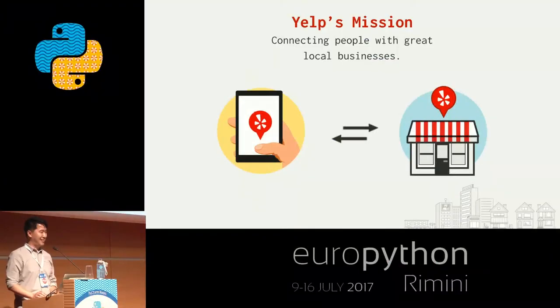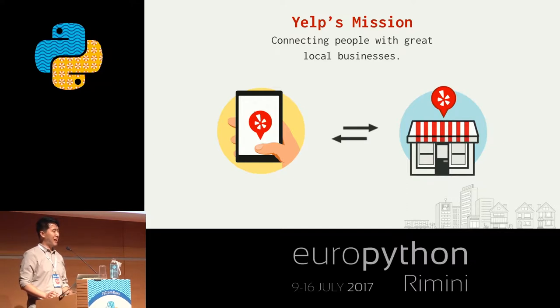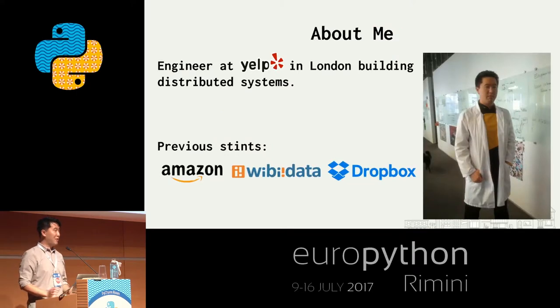All right, great. Thanks for coming, and I hope you all can hear me. Luckily, we've got this wonderful mic. My name's Li Shang. I'll be talking about code golfing with Python. A little bit about the company I work for — it's Yelp. We connect people with great local businesses. We have an app and a mobile website to help you find interesting local businesses. I'm an engineer at Yelp, building distributed systems, primarily with Kafka.